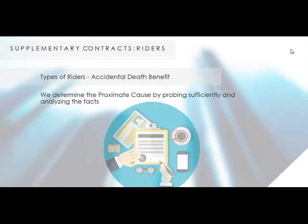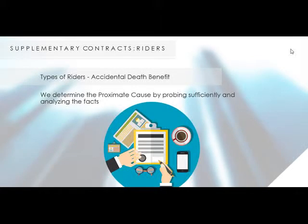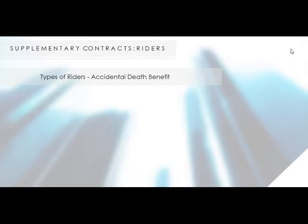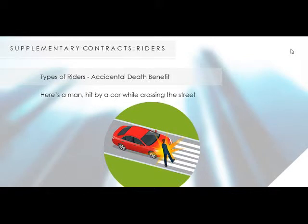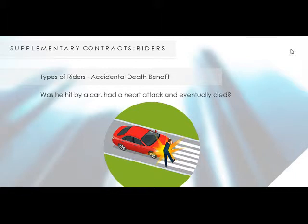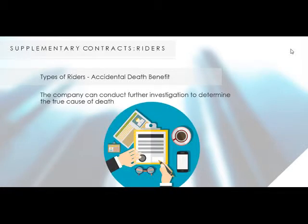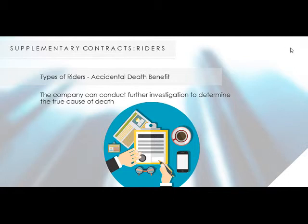We determine the proximate cause by probing sufficiently and analyzing the facts surrounding the case. Take the case of a man hit by a car while crossing the street. The person was holding his chest and couldn't move. Did he have a heart attack which immobilized him and led to the car hitting him, or was he hit by the car, had a heart attack, and eventually died? The company can conduct further investigation to determine the true cause of death. If it's found that the proximate cause of death is the car hitting him, causing the attack and eventual death, the benefits of the Accidental Death Benefit rider will be paid to his beneficiaries.